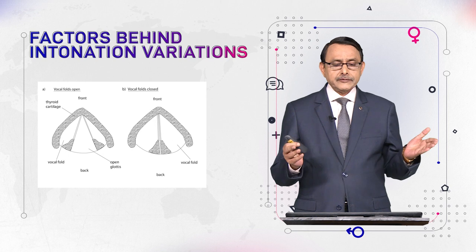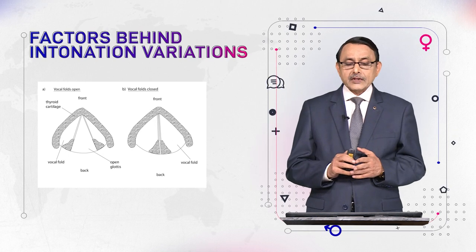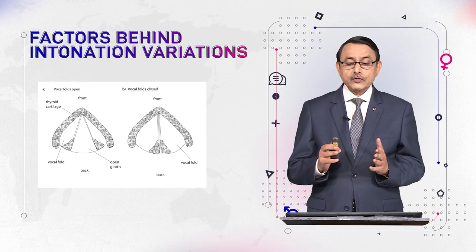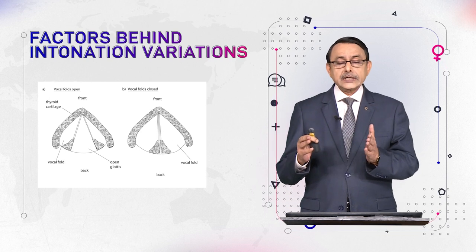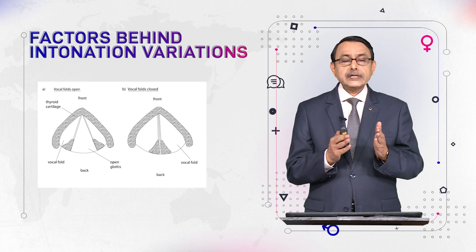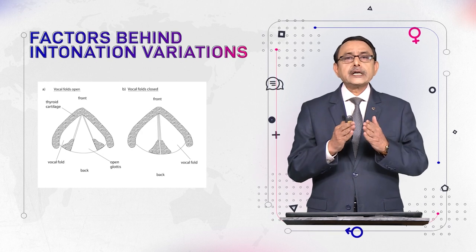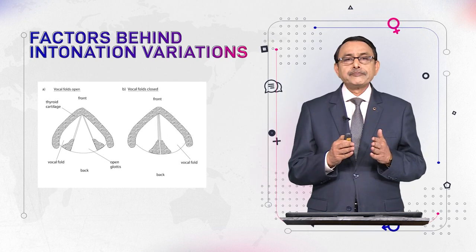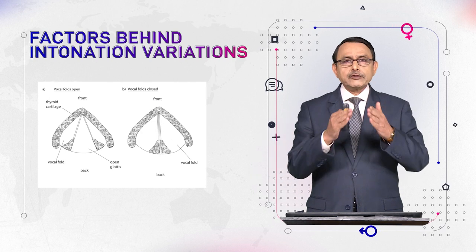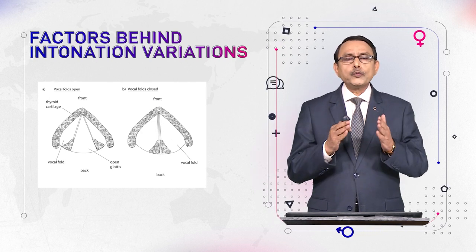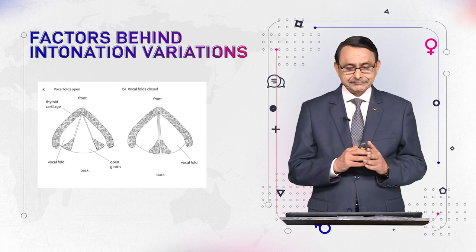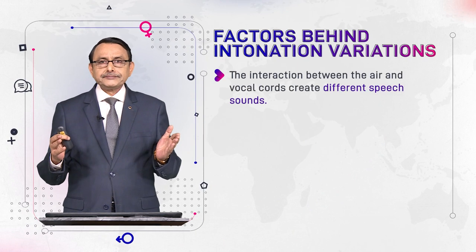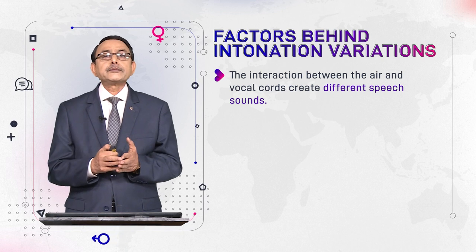Here is a visual of the vocal cords. The figure on the right side shows them wide apart — the white rectangular area shows the open vocal cords. The interaction between the air and vocal cords creates different speech sounds.